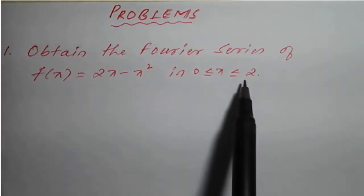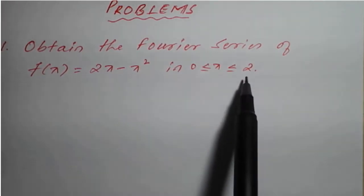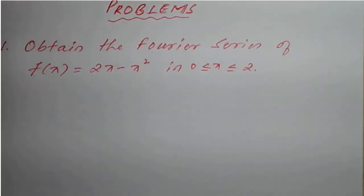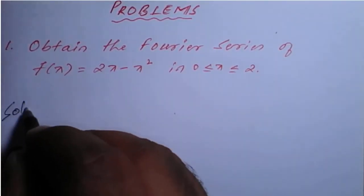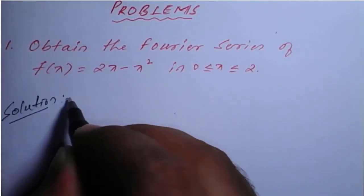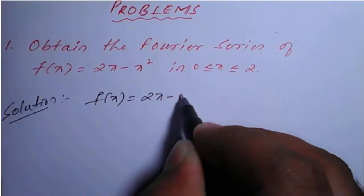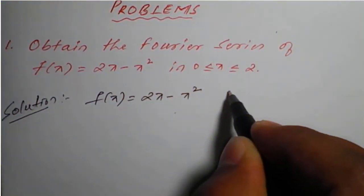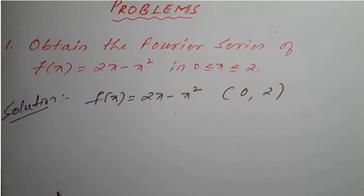You can observe here that this is an arbitrary period, meaning this is a period of 2L. The given function is f(x) = 2x minus x² in the interval (0, 2). We will simplify this now.